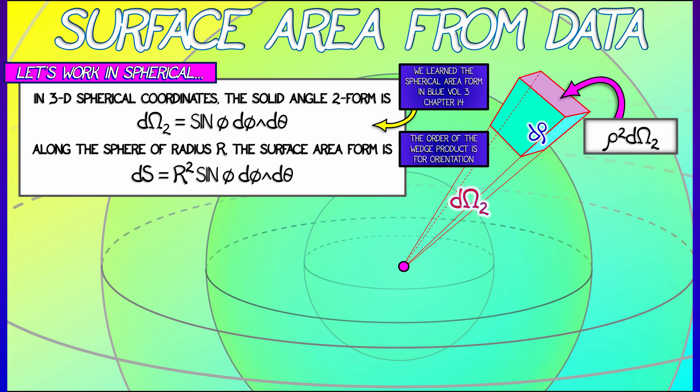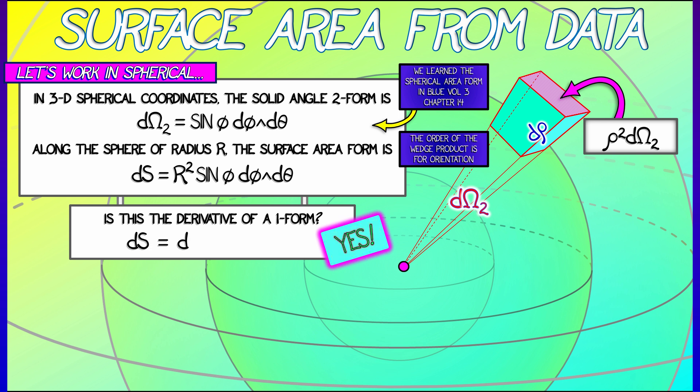Here's the big question. If we want to use Stokes' theorem to approximate surface area based on a sequence of data points along the boundary, we need to know, is this two-form really the derivative of a one-form? Yes, yes, it is. Because it's the derivative of minus R² cos φ dθ. Check that, see that that is true, and now we can use Stokes' theorem.